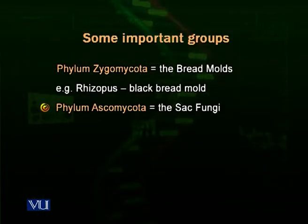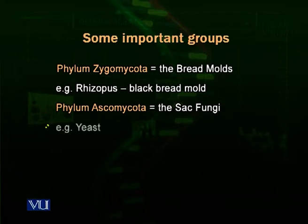Then there is a group called Ascomycota, or Ascomycetes. They are the sack-like fungi — their fruiting bodies or spore-producing structures are shaped like sacks. The Ascomycota phylum also includes yeast. Yeast are very important organisms; we produce many baking products using yeast, and yeast also have certain important characteristics we will discuss shortly.